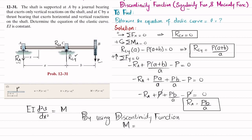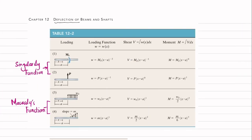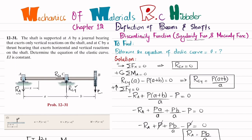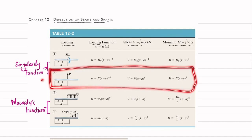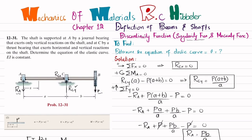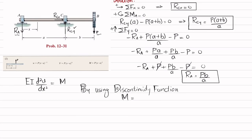We will use the singularity function, which covers point loads and moments. This is the table available in chapter 12 on deflection of beams and shafts. The columns show: loading, loading function, shear, and moment function. Since we have only concentrated forces, we will use the second row of the table to calculate the moment function.